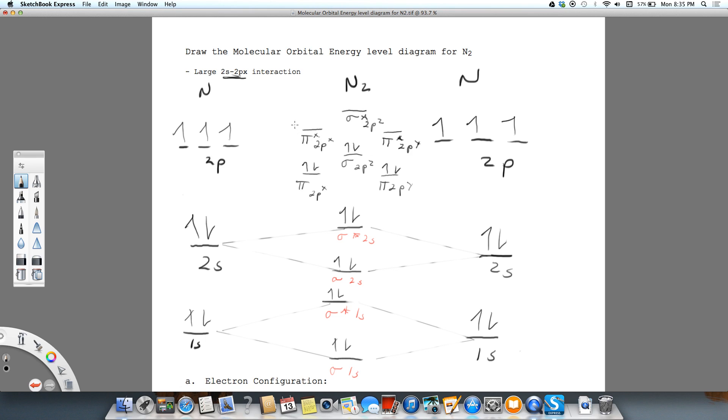There are no antibonding electrons with N2. So that's why we end up with a triple bond. So I'm just going to simply now connect all these with light lines.